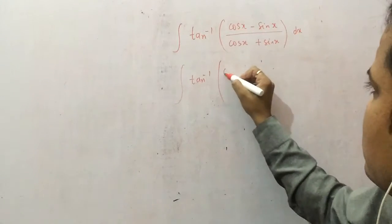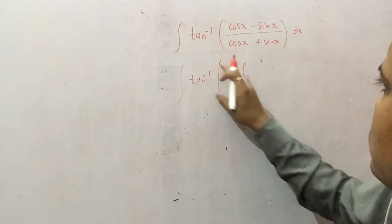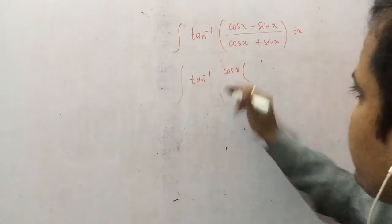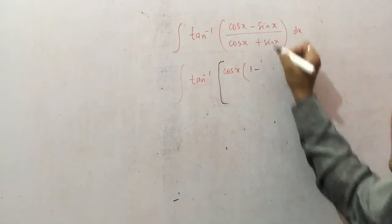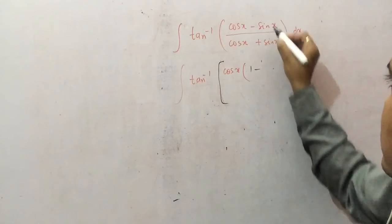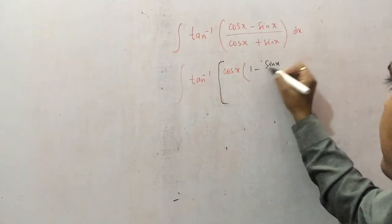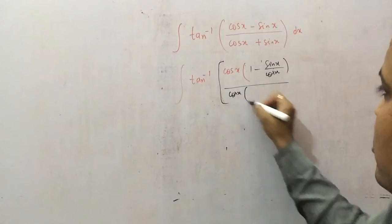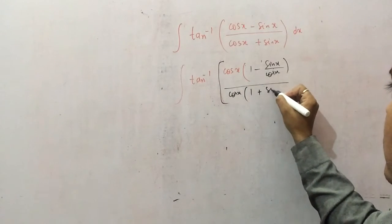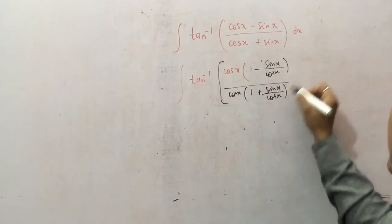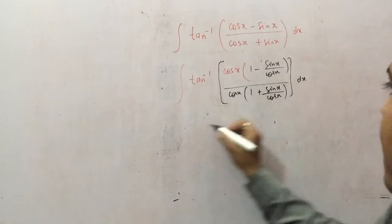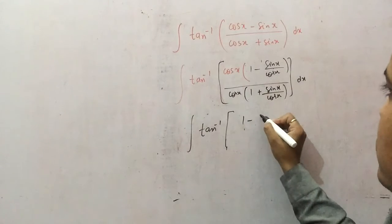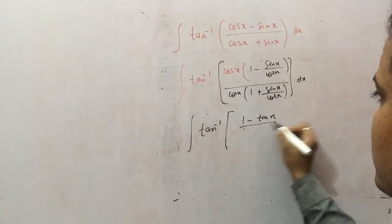So 1 minus sin x by cos x upon, take common from the numerator and denominator also, 1 plus sin x upon cos x. Now you would end up with 1 minus tan x upon 1 plus tan x.